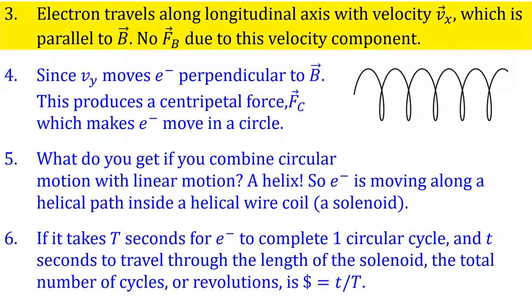The electron's x-velocity does not subject the electron to any type of magnetic force. So as mentioned, the electron's y-velocity results in a centripetal force, which results in circular motion. And what do you get if you have simultaneous circular motion and linear motion? You get a helix.